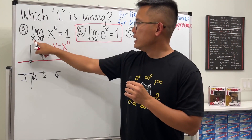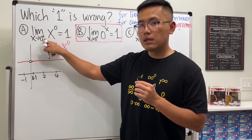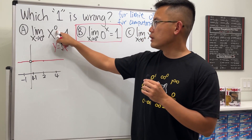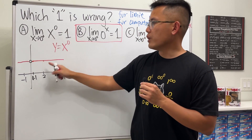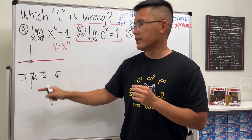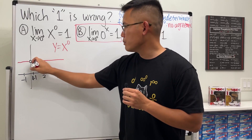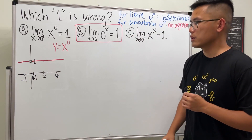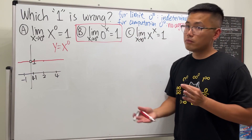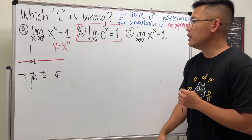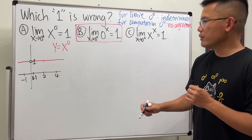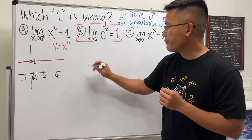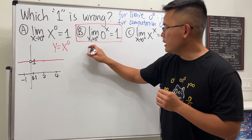From this graph, the limit as x approaches zero plus of x^0 equals one. The y-value is 1 — done.